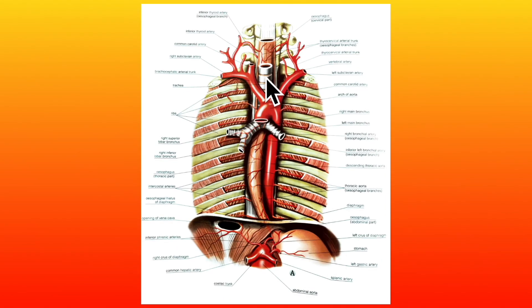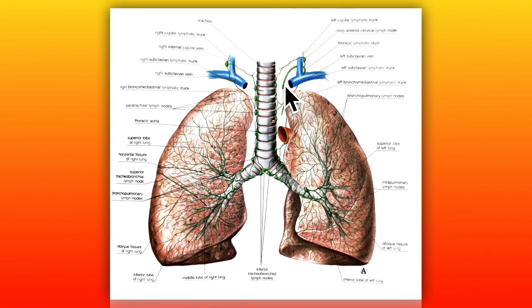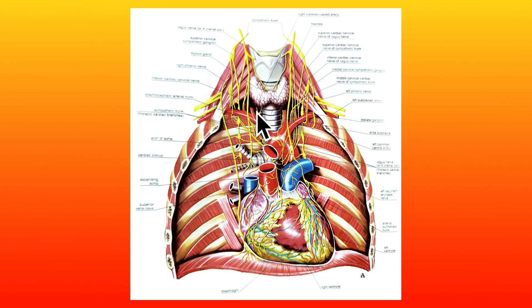Now let's learn about the vessels and nerves supplying the trachea. The trachea is supplied by branches from the inferior thyroid artery. The veins drain into the left brachiocephalic vein. The lymphatics of the trachea drain into the paratracheal and pretracheal lymph nodes. The trachea is supplied by both parasympathetic and sympathetic nerves. The parasympathetic nerves are sensory and secretomotor to the mucous membrane, and motor to the trachealis muscle, while sympathetic nerves are vasomotor.